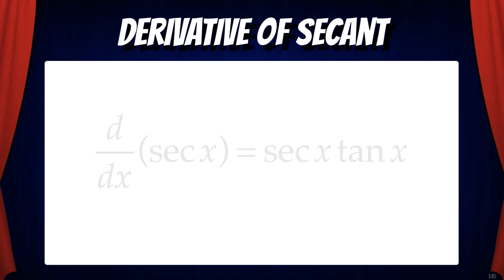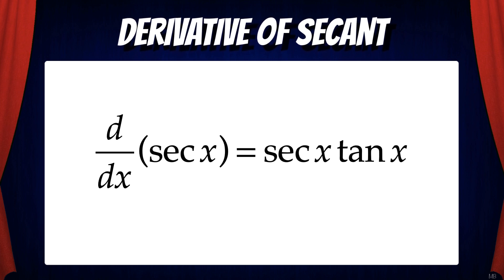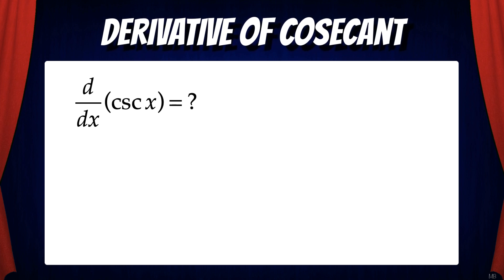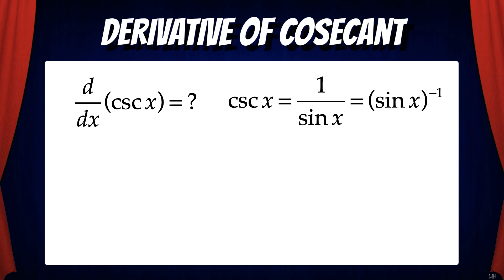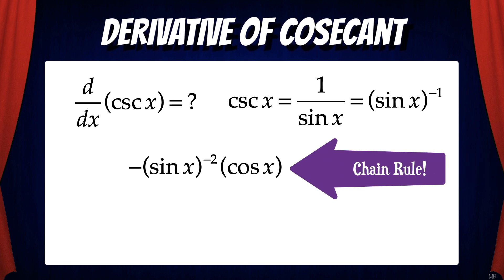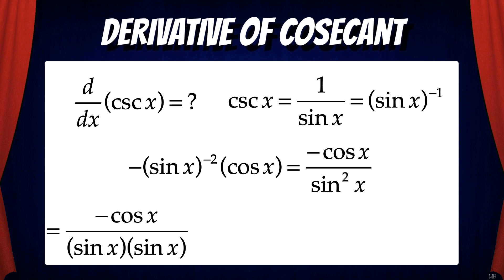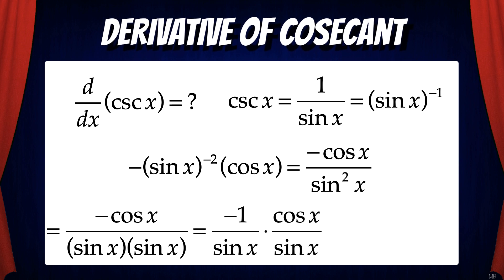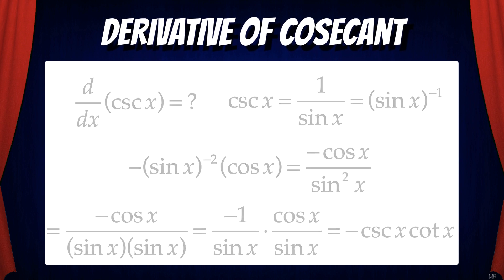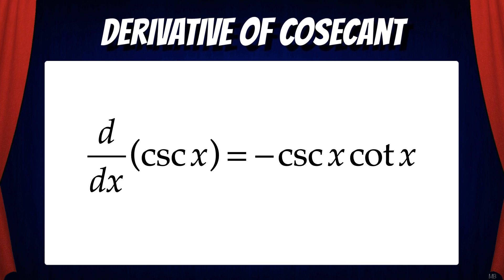So add this to your list of trig derivatives — the derivative of secant x is secant x tan x. Last one: let's find the derivative of cosecant x. We start by converting cosecant x to 1 over sine x, which is equivalent to sine x to the negative 1 power. Using the chain rule, we find the derivative of the outside part, which gives us negative sine x to the minus 2 power, then multiply by the derivative of the inside — the derivative of sine is cosine x. This reduces to negative cosine x over sine squared x. We rewrite this as negative cosine x over sine x times sine x, which is equivalent to negative 1 over sine x times cosine x over sine x — that's negative cosecant x cotan x. The derivative of cosecant x is negative cosecant x cotan x.